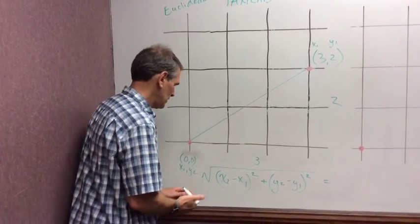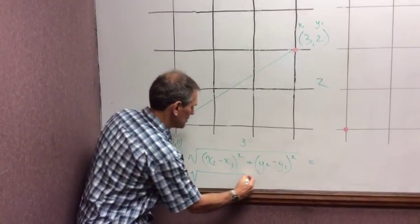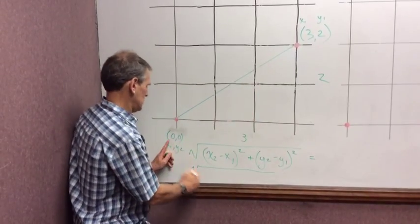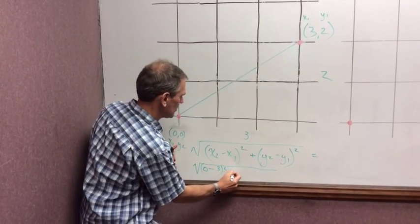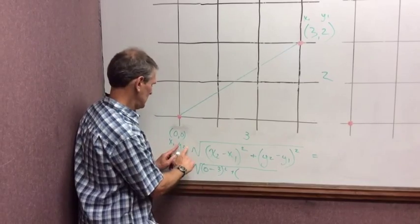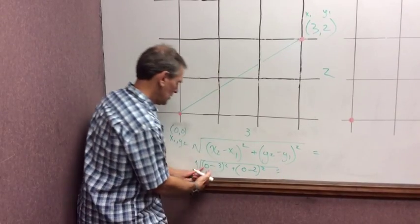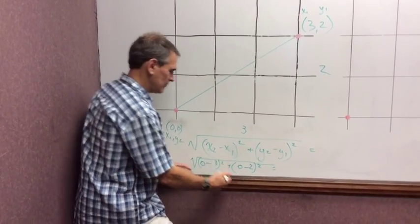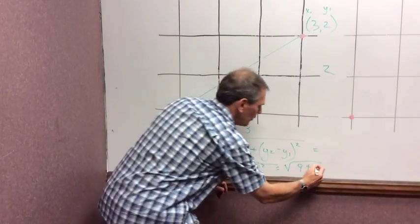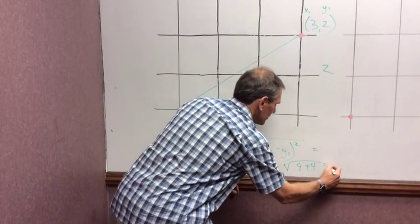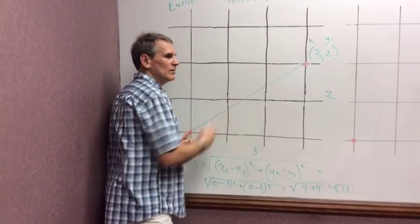So let's use the distance formula. We've got x₂, 0, minus 3, take square root, plus y₂, 0, minus 2. 0 minus 3 is negative 3. Negative 3 squared is 9. 0 minus 2 is negative 2. Negative 2 squared is 4. So 9 and 4 is 13. Square root of 13. So that would be the distance between these two points.